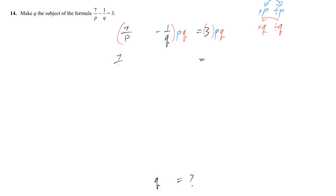So, I just write down 7 over P something, negative 1 over Q something. And that something is PQ.